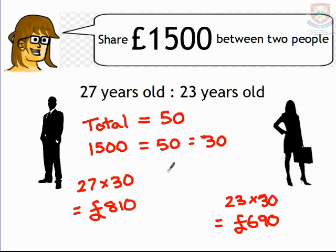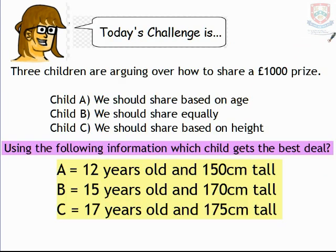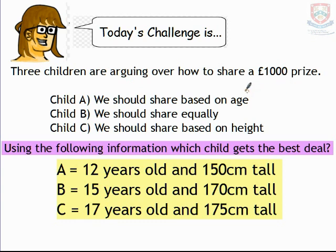So why don't you give it a go in today's challenge? Three children are arguing over a share of £1,000. Child A says they should share based on their age. Child B says they should share equally. Child C says they should share based on their height. The information for the three children is shown below. Can you work out whose idea would give that child the best amount of money? For example, if child A received the most money and it was based on age, then child A would be the best off. Leave your answers in the comments section below.